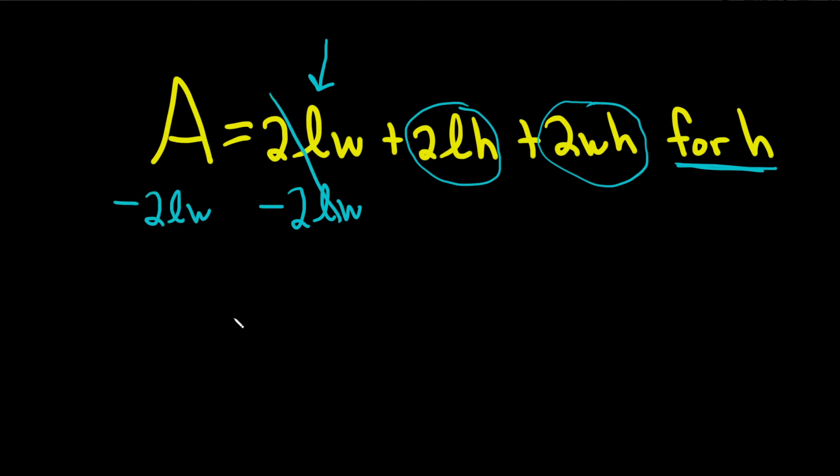I'm going to write minus 2LW minus 2LW. These go away. So you get A minus 2LW equals all of this stuff over here: 2LH plus 2WH.